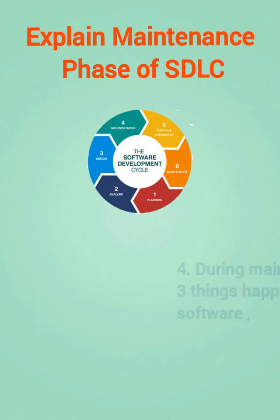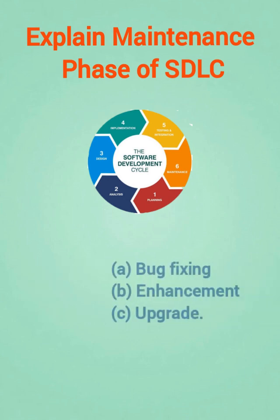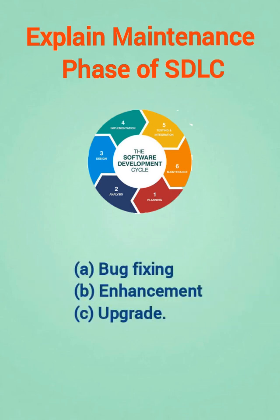During the maintenance phase, three things happen to the software: first, bug fixing; second, enhancement; third, upgrade. We will now understand what bug fixing, enhancement, and upgrade each mean.